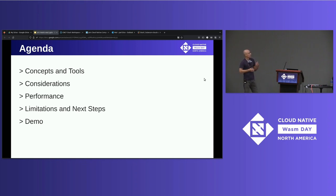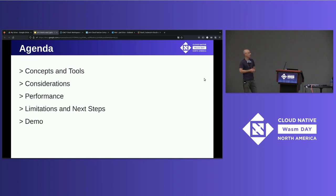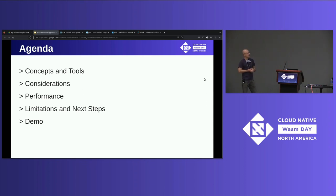We'll look at performance — what sacrifices, if any, do we have to make to achieve that level of isolation? Is there a throughput versus latency tradeoff? And then we'll look at some of the limitations of the current state of this tooling and how we can remedy them over time.